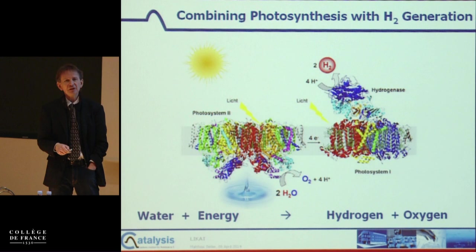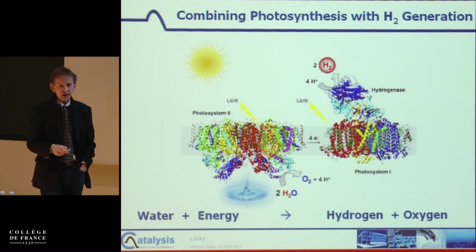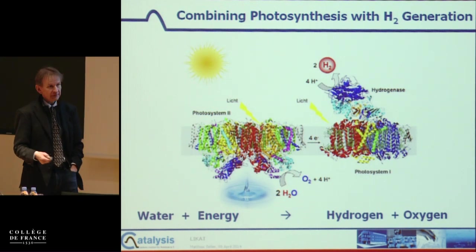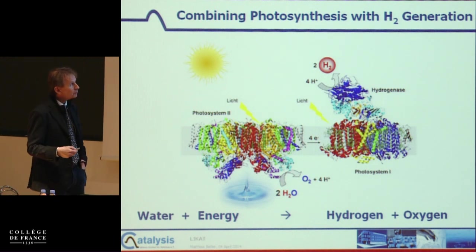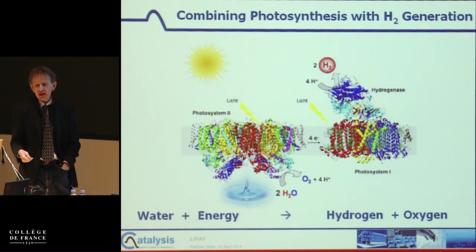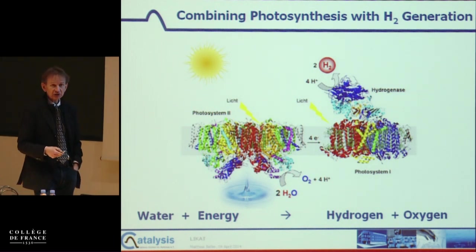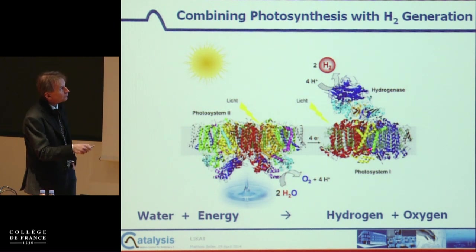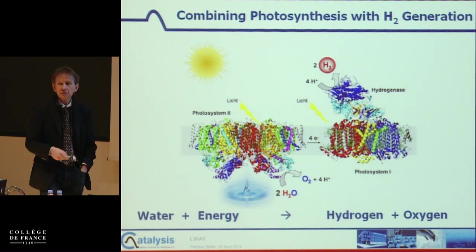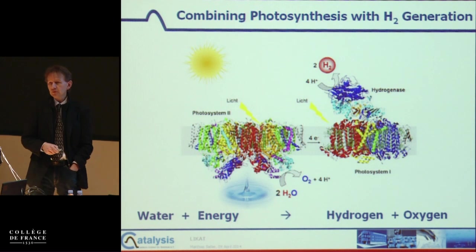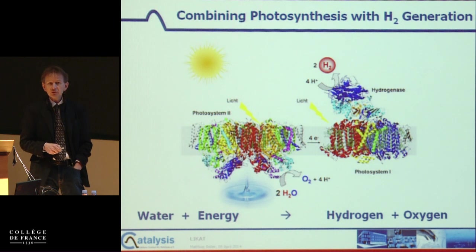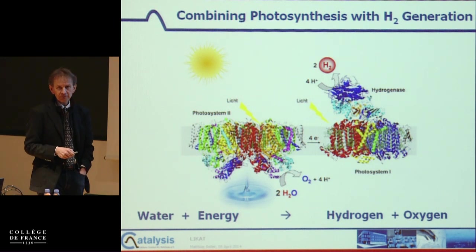There are two types of naturally occurring hydrogenases — enzymes which reduce protons to hydrogen: the nickel-ion-based and the iron-based enzymes. One approach people follow is to combine these natural systems to produce hydrogen in a more efficient way.